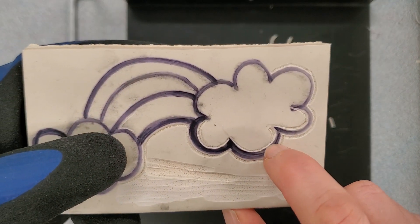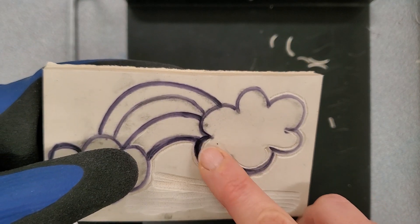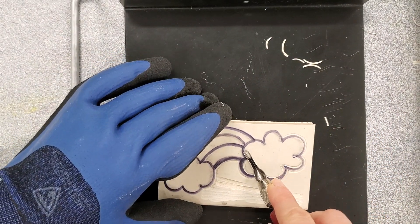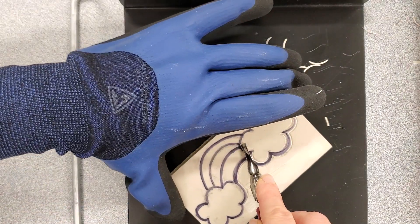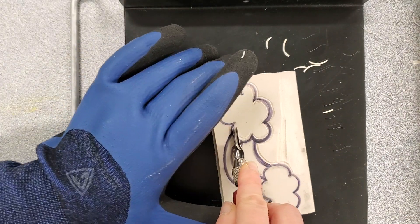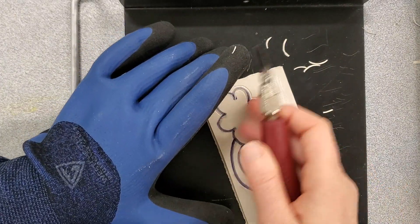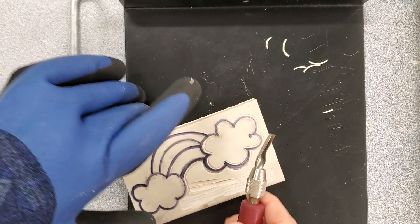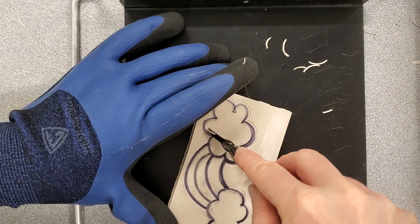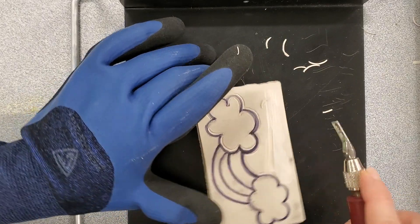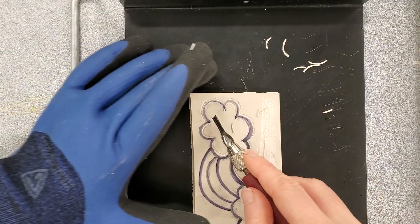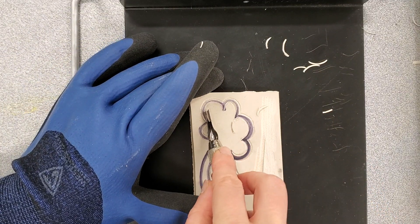Now I'm also going to do the same thing on the inside of this black line. So I'm going to use that two tool again and carve on the inside of that black line. So the goal is to preserve anything that is black. And we are going to carve away anything that is white.